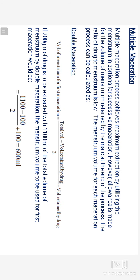Next is multiple maceration — including double maceration and triple maceration. Multiple maceration achieves maximum extraction by utilizing the menstruum in portions across successive macerations. Allowance is made for the volume of menstruum retained by the marc at the end of the process. The ratio of drug to menstruum is low. The menstruum volume for each maceration process can be calculated using a formula.